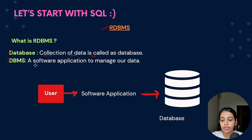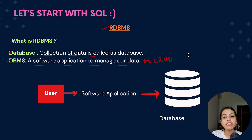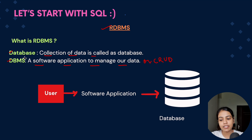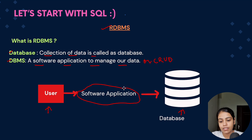Now what is a database management system? It is a software application to manage our data, or you can say to perform CRUD operations on our data. Now consider that we have a lot of data in our database — we need to manage creation, updation, insertion, or deletion in the data. So for managing all those CRUD operations, we need a software which will help us manage the data present in the database. That software is DBMS. Consider there is a user who wants to manage a database — they will use a software application called DBMS.